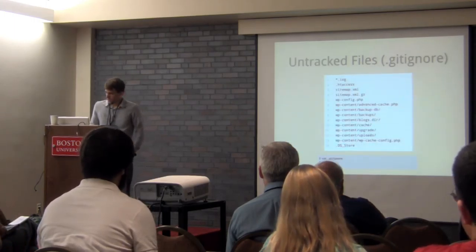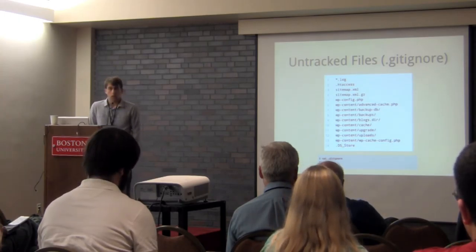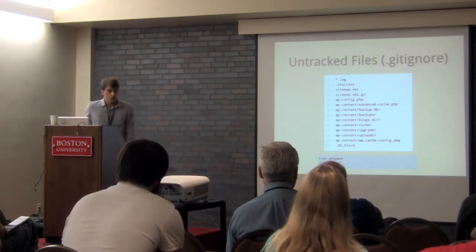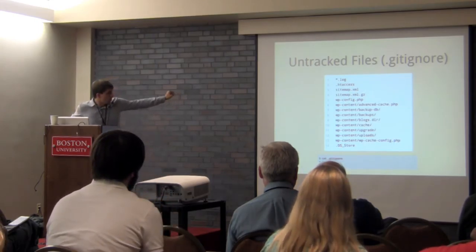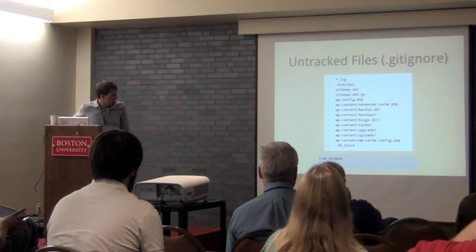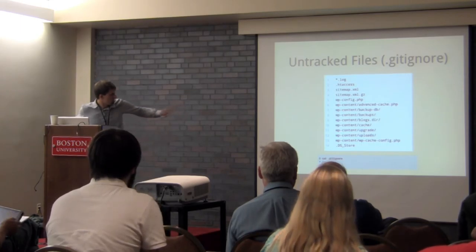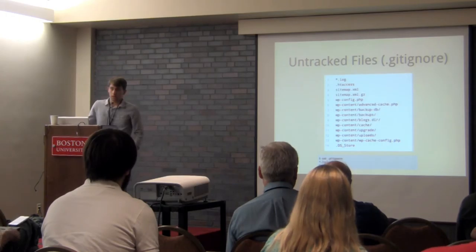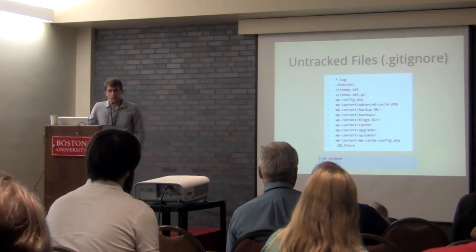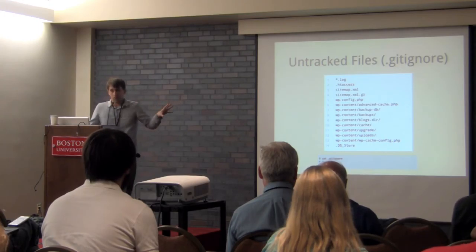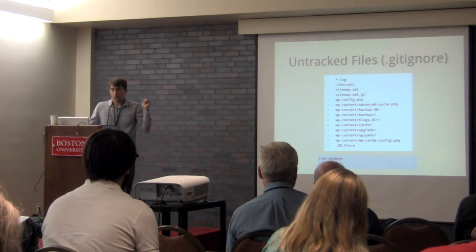There's also an important file called the .gitignore file. For a WordPress site, for example, you'd want to ignore log files, .htaccess files, sitemaps, wp-content backup files, and wp-content cache — these are things that could clutter your repository. Another thing I ignore is files generated by my build tool Grunt, which creates a lot of build files and application files, so I ignore that whole folder to keep my repository clean.